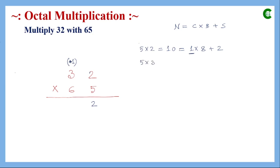Next, 5 × 3 = 15, plus carry 1 equals 16. Sixteen is represented as 2 × 8 + 0, so the sum digit is 0 and carry is 2. Since this is the last digit in this partial product, we write the carry of 2 here.